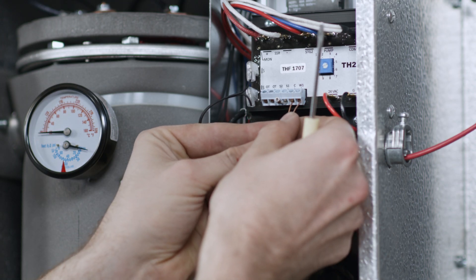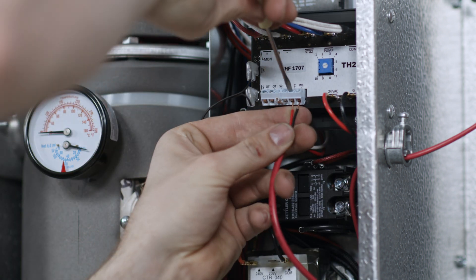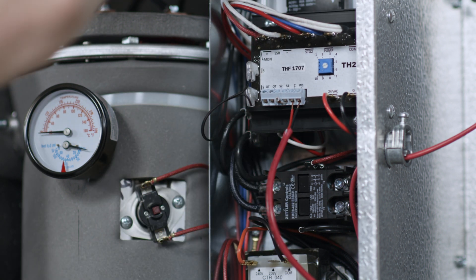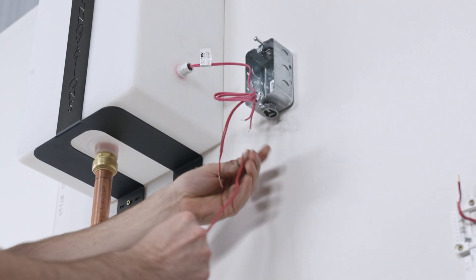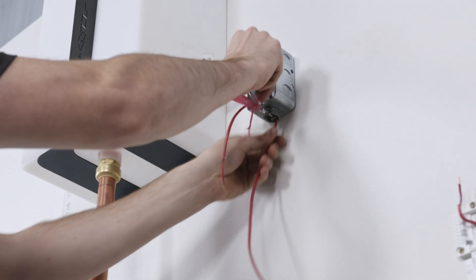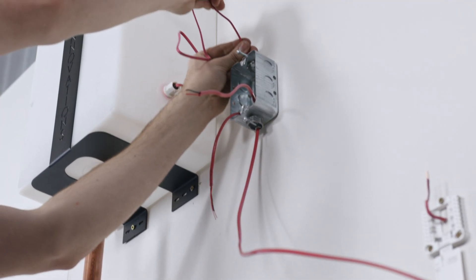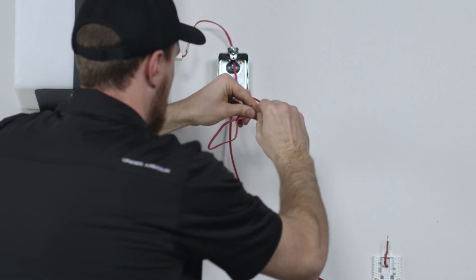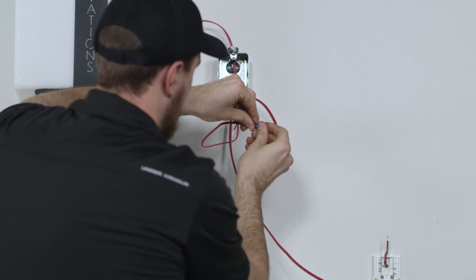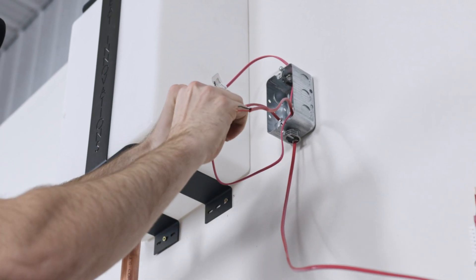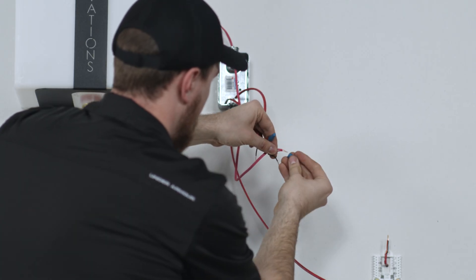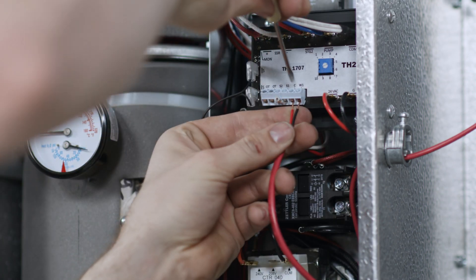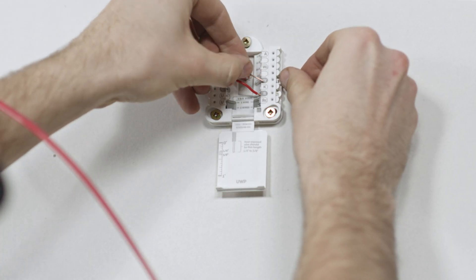On the boiler, you will need to connect your low water cutoff switch and thermostat to the W1 and C terminals. Take one wire from W1 and connect it to the first wire on the LWCS. Then, take the second wire on the LWCS and run it to R on the thermostat. Then, run a wire from C in the boiler to W in the thermostat.